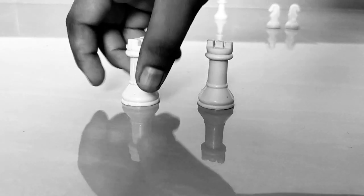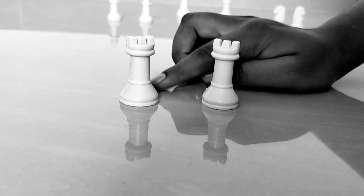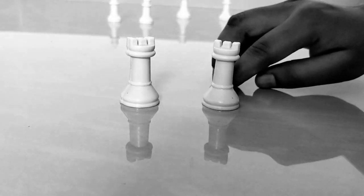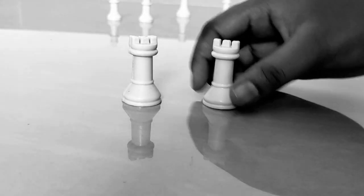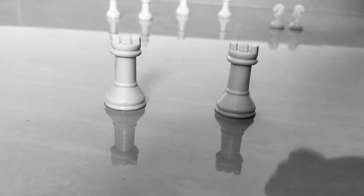This is a rook. We have two rooks in one set. The rooks are placed at the sides of the board.